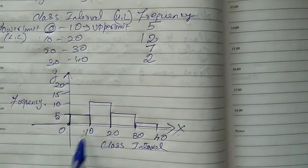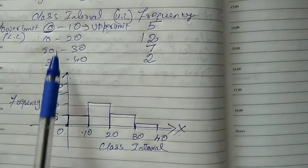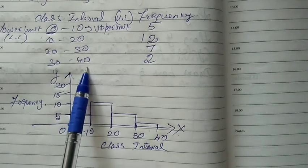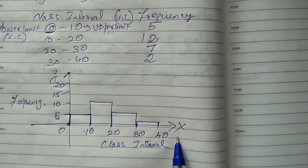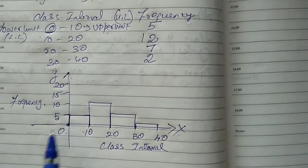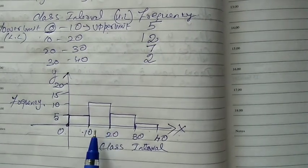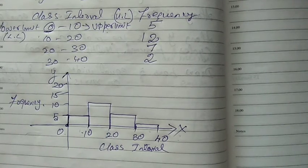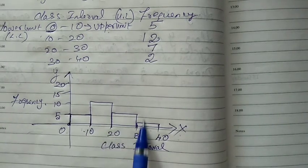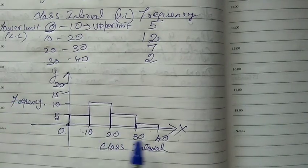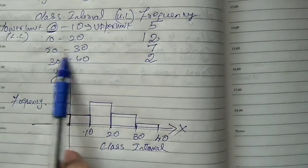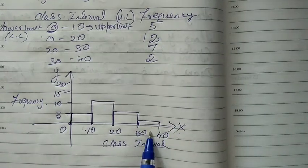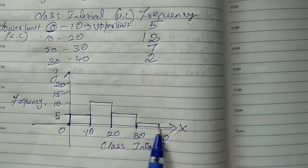In this histogram the bars come continuously — that is why the class intervals are given as 0 to 10, 10 to 20, 20 to 30, 30 to 40. Class interval is taken on X-axis and frequency on Y-axis, and we draw continuously. It is not like a bar graph — in a bar graph there is a uniform space in between, but here it is continuous. That is the difference between histogram and bar graph.